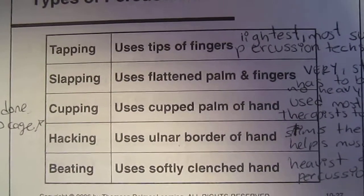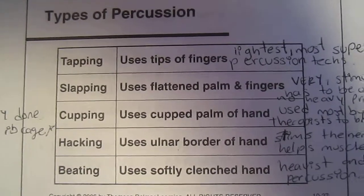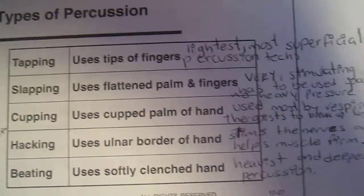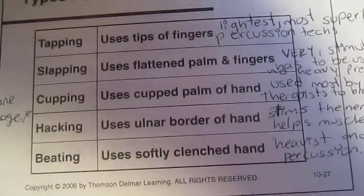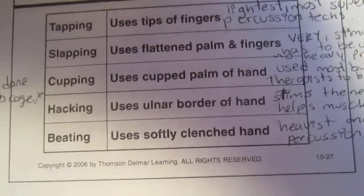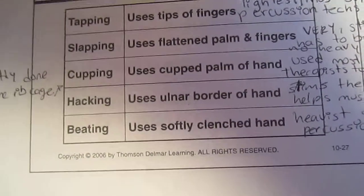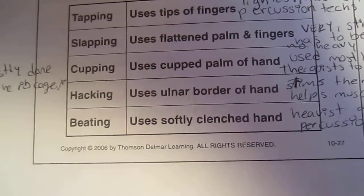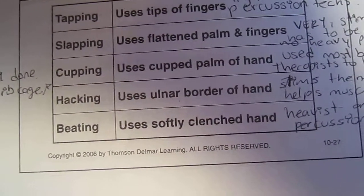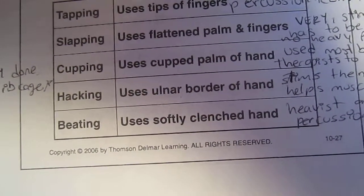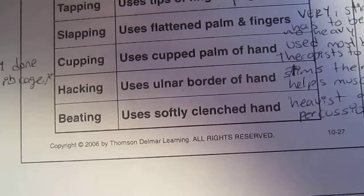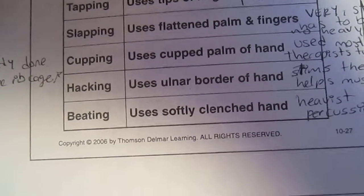Tapping uses the tips of the fingers and is the lightest, most superficial of the percussion techniques. Slapping uses the flattened palm and fingers — it is very stimulating and has to be used sparingly, with no heavy pressure.